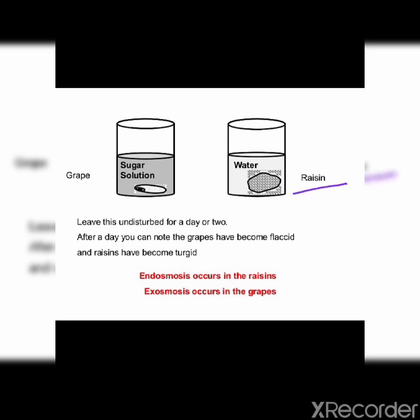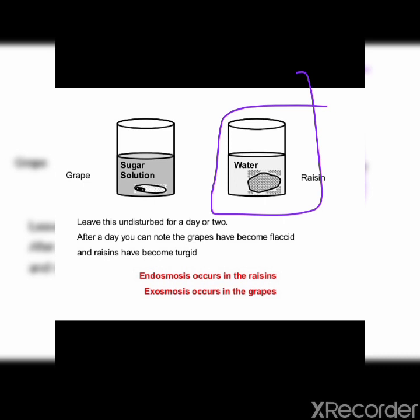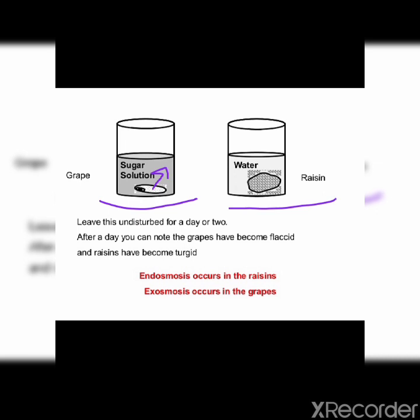In raisins, endosmosis takes place. 'Endo' means inward. Endosmosis is the inward diffusion of water through a semi-permeable membrane when the surrounding solution is less concentrated, and this tends to swell up the cell — you can see the raisin is swelled. The solution outside the cell has a lower solute concentration than the fluids inside the cell, so water molecules from the outside will move into the raisin cell. In exosmosis, water moves from inside to outside so the grape becomes flaccid; in endosmosis, water molecules move from outside to inside so the raisin becomes turgid.